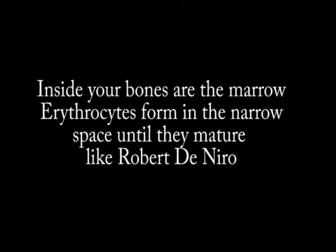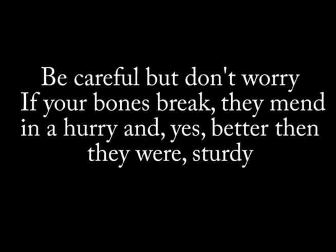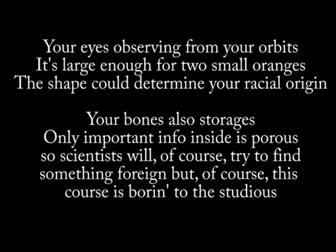Inside your bones is the marrow. Erythrocytes form in the narrow space, until they mature like Robert De Niro. Be careful, but don't worry — if your bones break, they mend in a hurry, and yes, better than they were, sturdy. Your eyes sit in their orbits — it's large enough for two small organs. The shape could determine your racial origin. Your bones are also porous, so scientists will of course try to find something foreign.